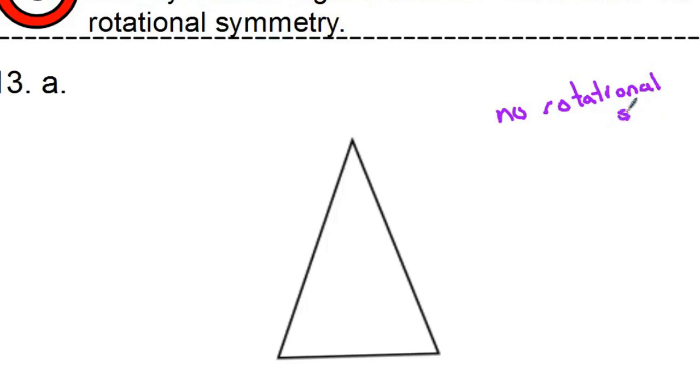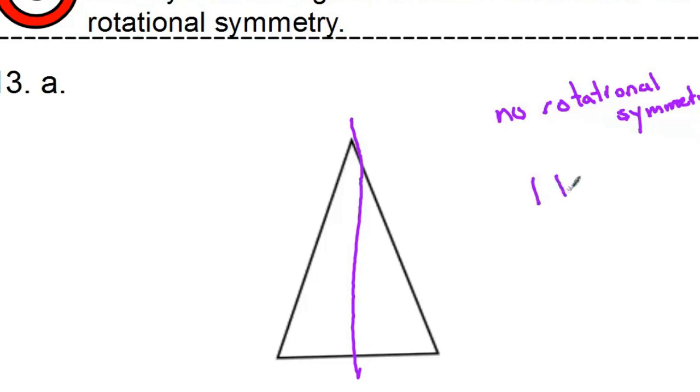As a review though, does it have any reflectional symmetry? It does. It definitely has at least one line down the middle here of reflectional symmetry. So one line of reflection.